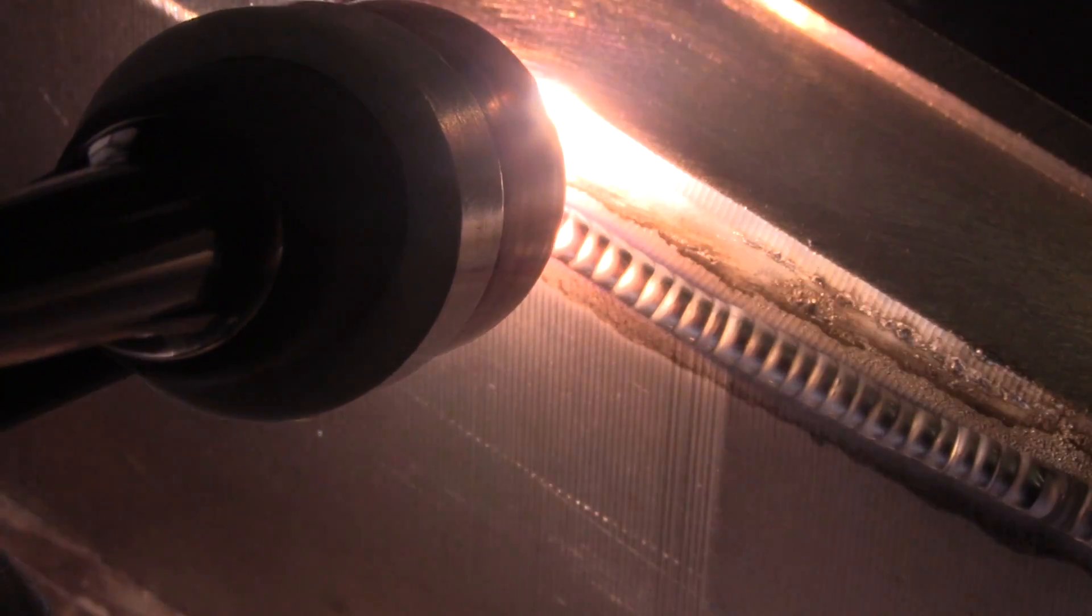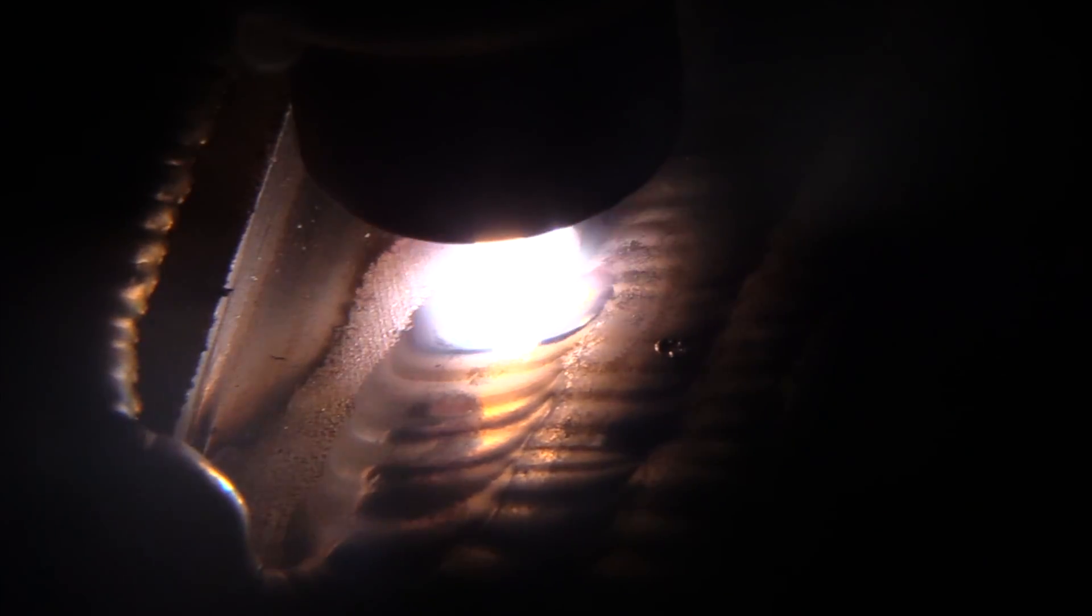Jody here with WeldingTipsAndTricks.com. We're doing some TIG welding aluminum today, a whole bunch of it. We're going to be running some beads on a corner like this to put some heat into the part. Then we're going to stack beads one after another after another to build up the part.